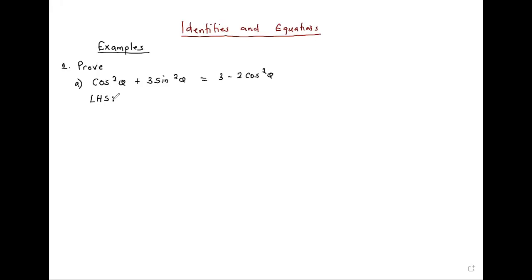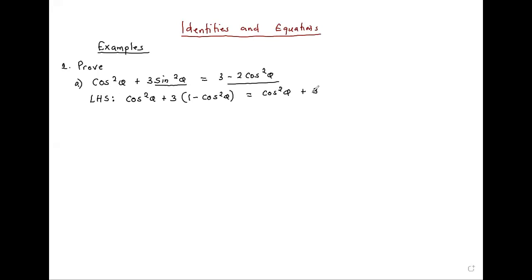Take the one that looks complicated. You can see on the right we only have cos, so this means that using the most important identity we must change sine squared to one minus cos squared. When we expand this we get cos squared theta plus three — from three times one we get three, three times negative cos squared...